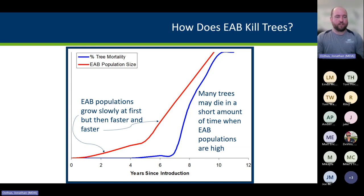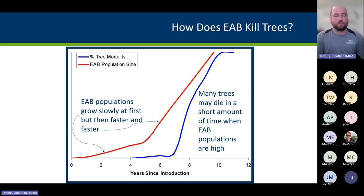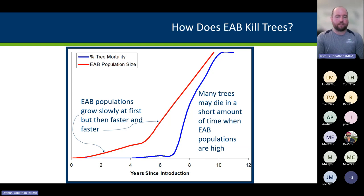The earlier you can detect Emerald Ash Borer populations — earlier on in that curve — the better outcomes you're going to have for your management activities in reducing that population and slowing the rate until you get to that population explosion with lots of trees dying in a short amount of time.